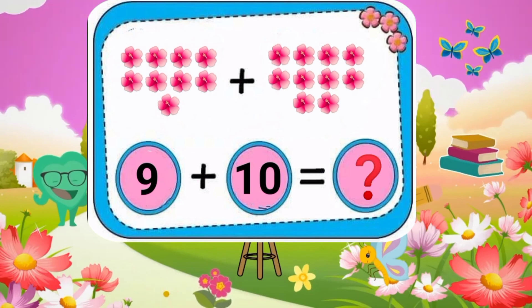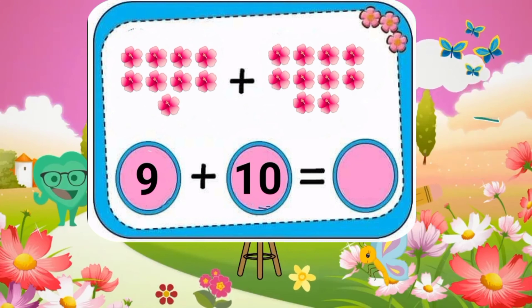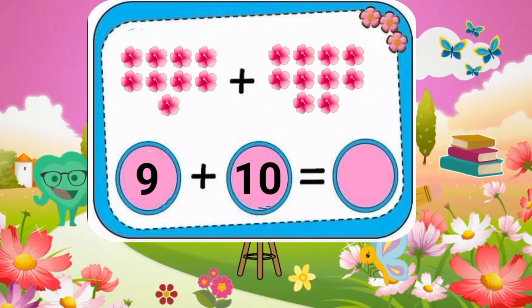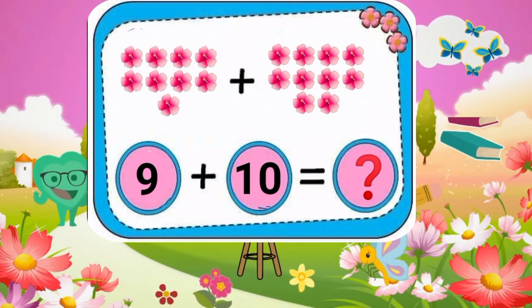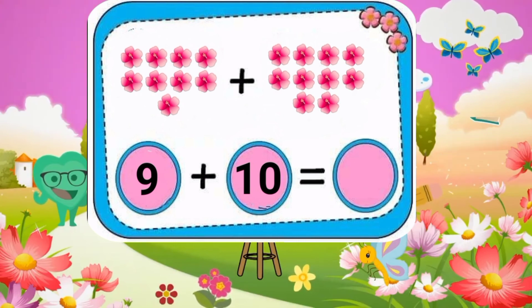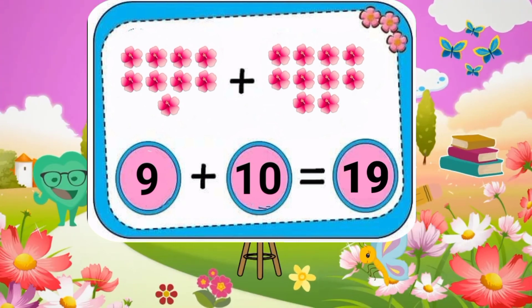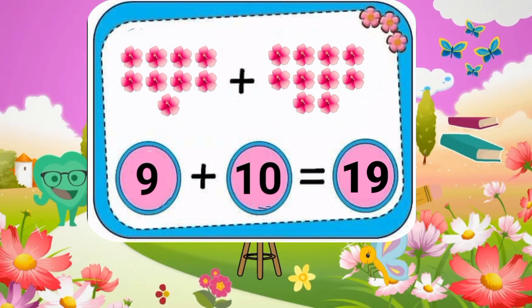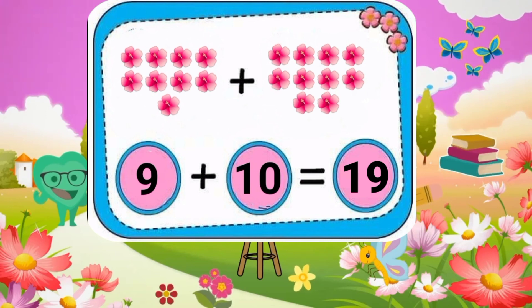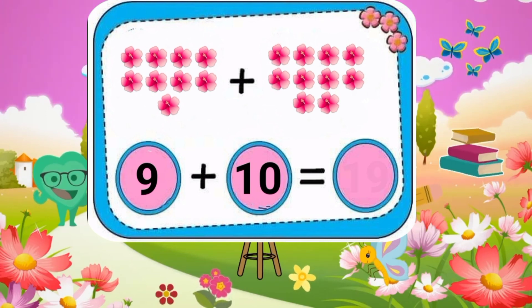9 plus 10 equals what? 9 plus 10 equals 19. Outstanding.